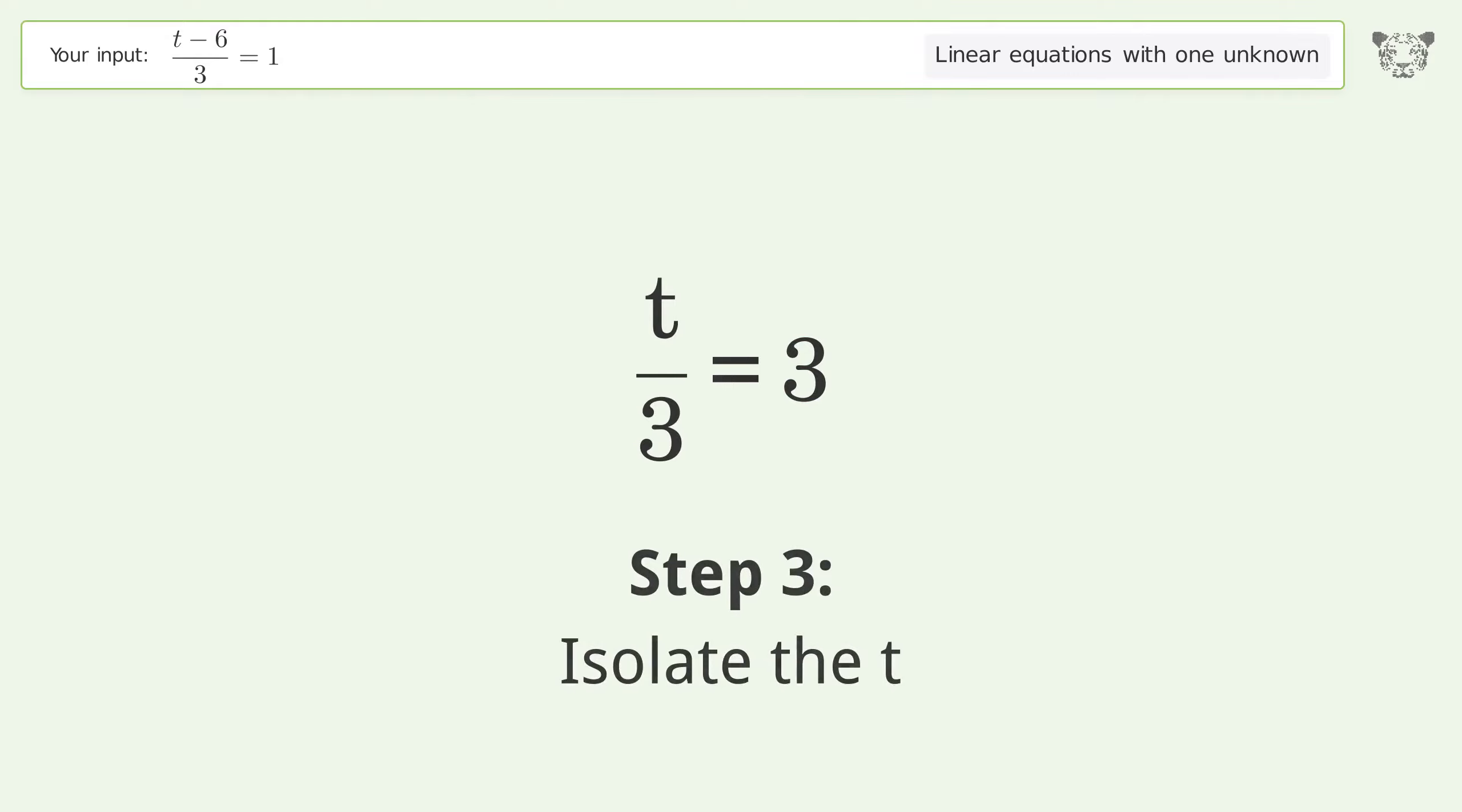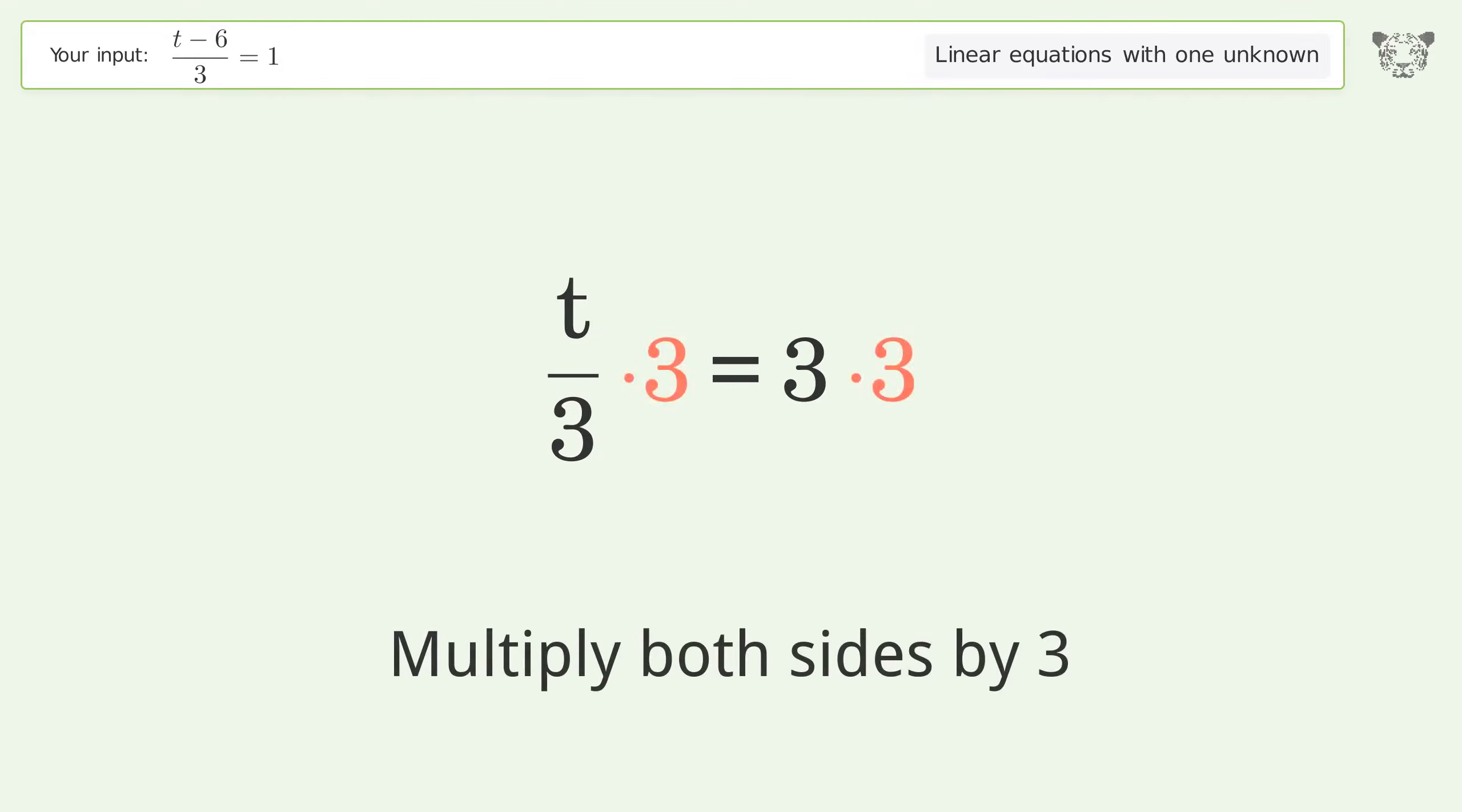Isolate the t. Multiply both sides by 3. Group like terms.